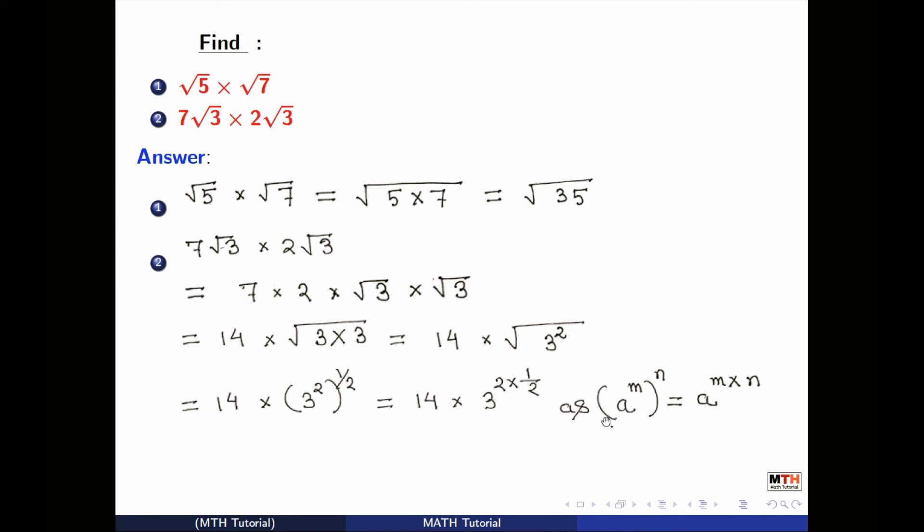Here a is 3, m is 2 and n is half. So look that here 2 gets cancelled in the power of 3.